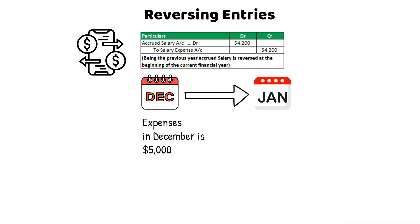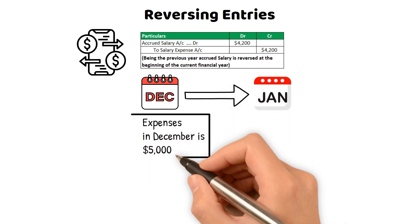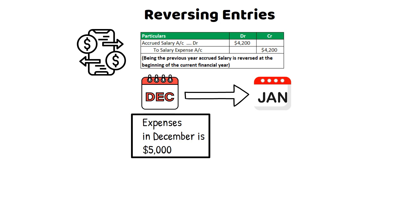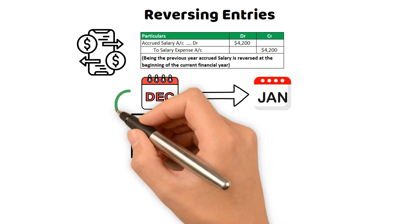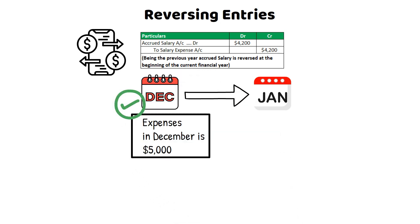In such cases, reversing entries are made at the beginning of the new period to reverse the previous period's accrual and recognize the actual cash payment. Reversing entries simplify the accounting process and help ensure that transactions are recorded in the correct period. Reversing specific adjusting entries allows the accountant to start the new period with a clean slate with only transactions that occurred during that period.